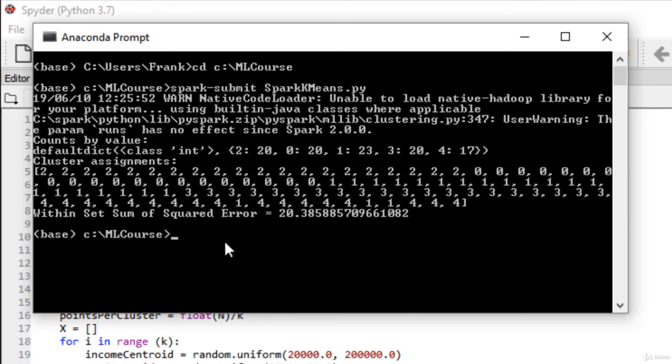And finally, we got a WSSSE metric, actually computing how good it is, of 20.3. Cool, so it worked. We actually did k-means clustering using Apache Spark, distributed potentially across a cluster if we had one.